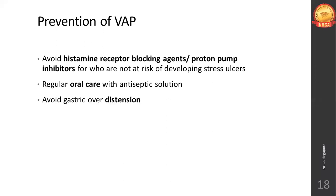Avoid gastric overdistension. The ventilated patient will not be able to eat food, so they will be put on nasogastric tube feeding. Sometimes nurses, if not careful, will overdose the patient with nutrition — giving 500 ml of feed in one shot instead of the prescribed every two to three hourly schedule, to save time. If the stomach gets overdistended, gastroesophageal reflux and regurgitation can take place.